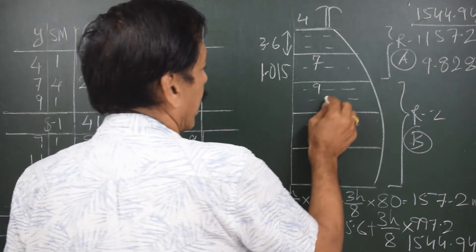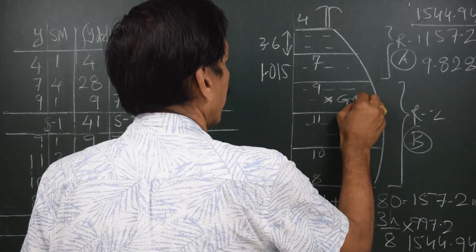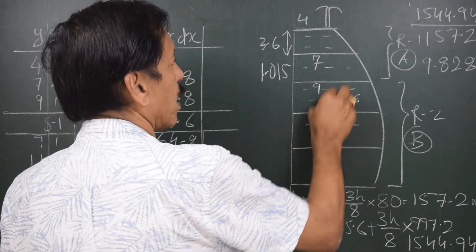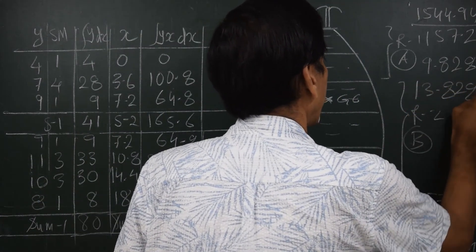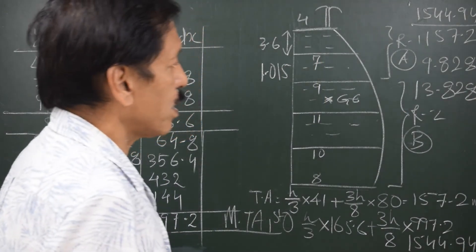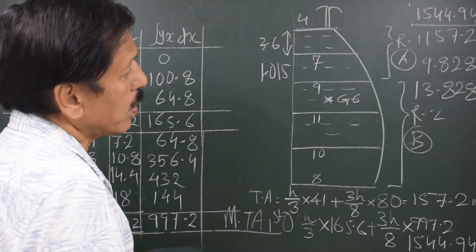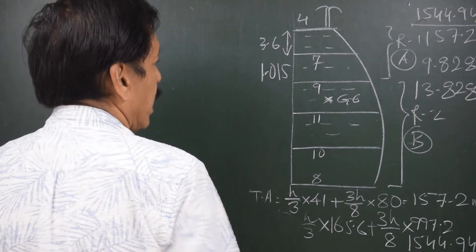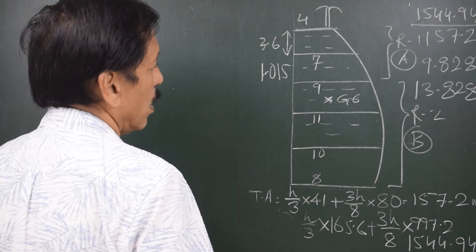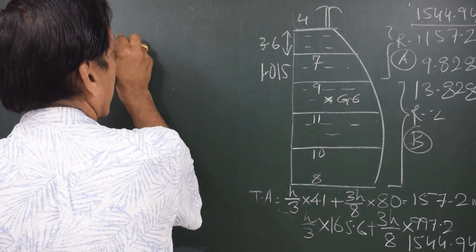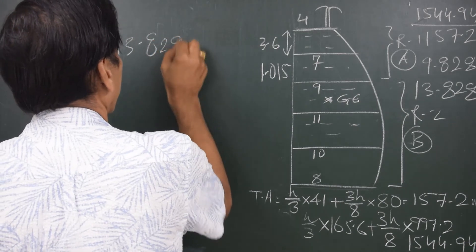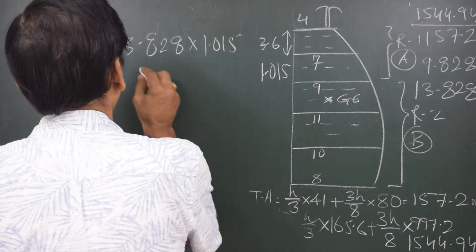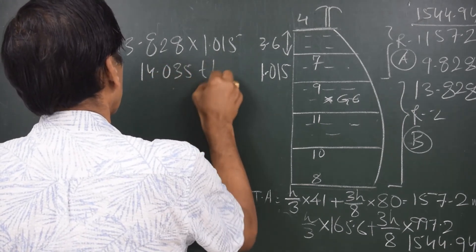So 9.828 meters is the position of the geometric centroid from the first ordinate. Adding the distance from the water level to the first ordinate gives 13.828 meters — that is the position of the geometric centroid from the water level. The density of the water is 1.015 tons per cubic meter, so pressure equals 13.828 times 1.015, giving 14.035 tons per square meter.